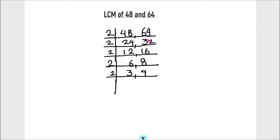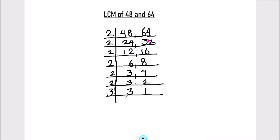Divide 4 by 2. 3 is not divisible so we will write it as is and we will divide 4. 2 times 2 is 4. Now 2 times 1 is 2 and 3 is not divisible so we will write it as is. Now we will divide 3. 3 times 1 is 3. Both numbers are fully divided.